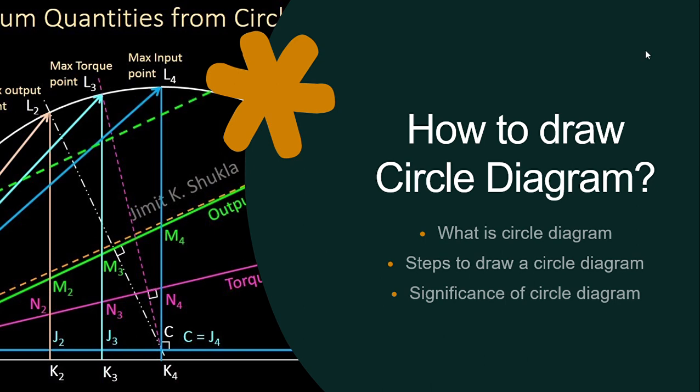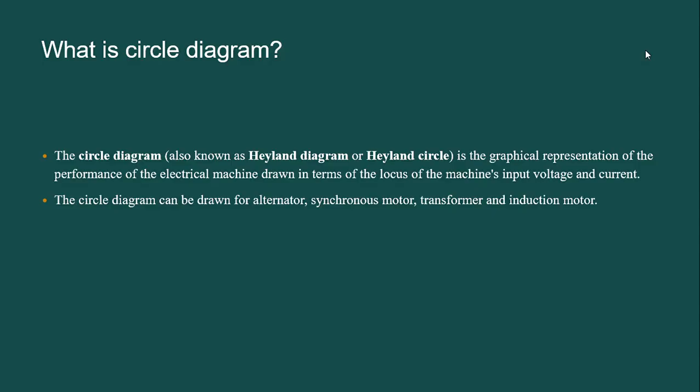Hello everyone. In this video, I would like to explain the steps to do a circle diagram of an induction motor. First, let us look into the definition of circle diagram. Circle diagram, also known as Heyland diagram or Heyland circle, is the graphical representation of the performance of an electrical machine. Circle diagram can be done for alternator, synchronous motor, transformer, and induction motor.